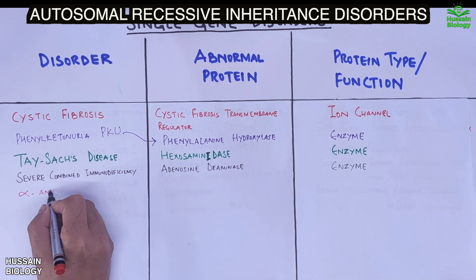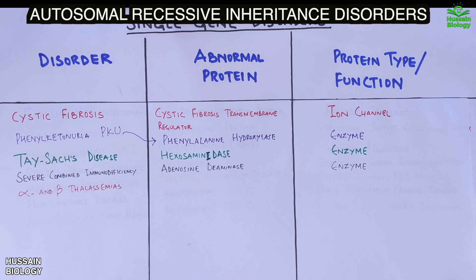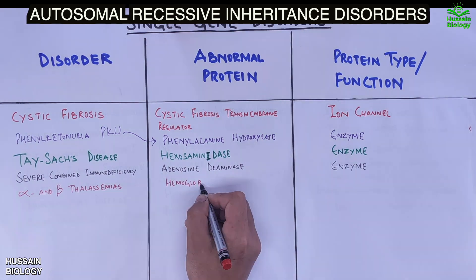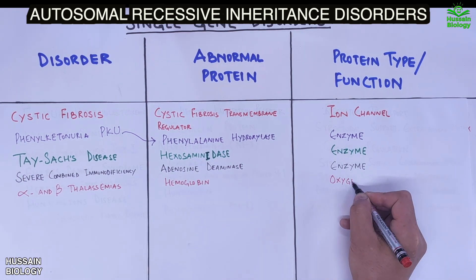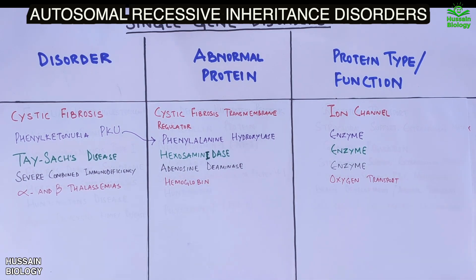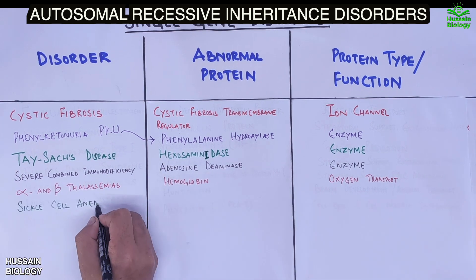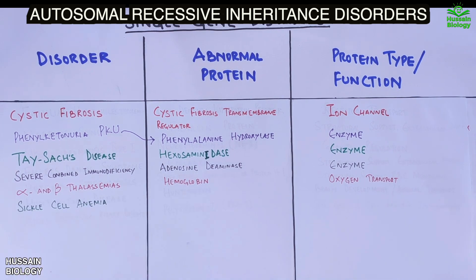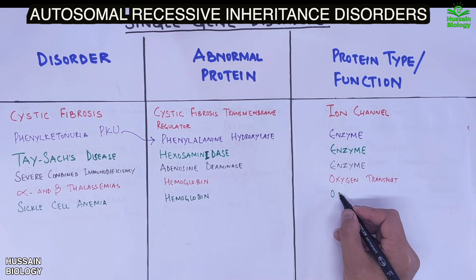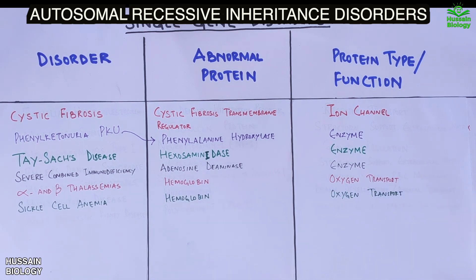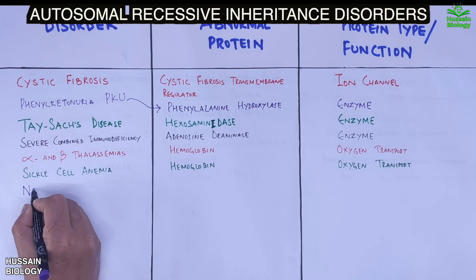Then we have alpha/beta thalassemia, where abnormal hemoglobin halts oxygen transport. Moving further, sickle cell anemia also involves abnormal hemoglobin protein that impairs oxygen transport. A detailed video on sickle cell anemia is linked in the description.